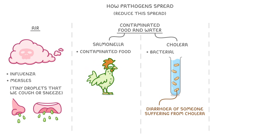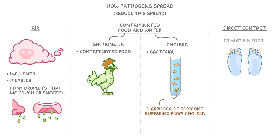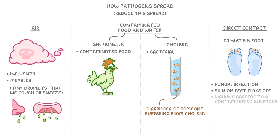Some pathogens have to be spread by direct contact though. For example, athlete's foot, which is a fungal infection that can make the skin on your feet flake off, is often spread by walking barefoot on contaminated surfaces, such as in public swimming pools.